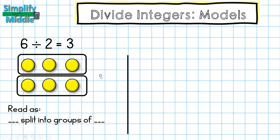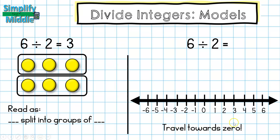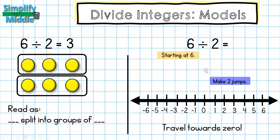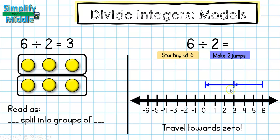On the number line, division travels towards zero — the opposite of multiplication, where you travel away from zero. We start at six and make two jumps to get to zero. Jump one goes from six to three, and jump two goes from three to zero. My answer is positive three. If I were on the negative side of the number line, my answer would be negative.